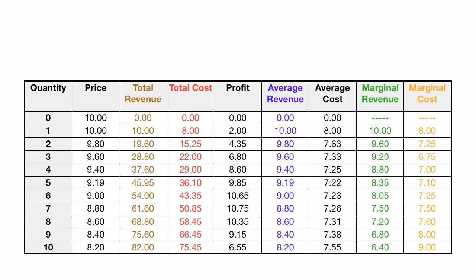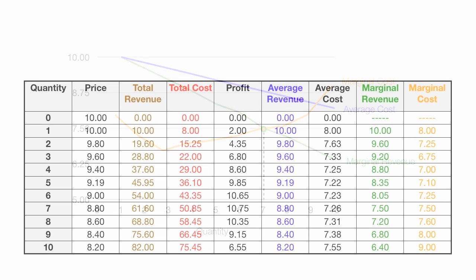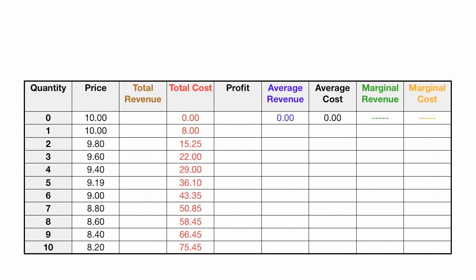Here's what the final product looks like, and I'm also going to graph the numbers and show you where marginal cost equals marginal revenue. In this case, the monopoly is going to produce a quantity of 7 — that's where marginal cost equals marginal revenue. I'm going to tell you the answer, but then I'm going to go through all the calculations.